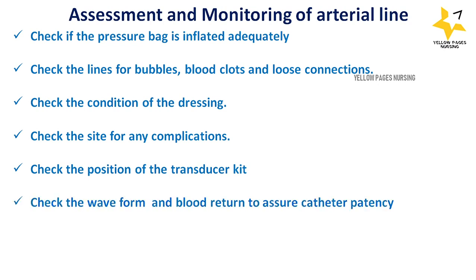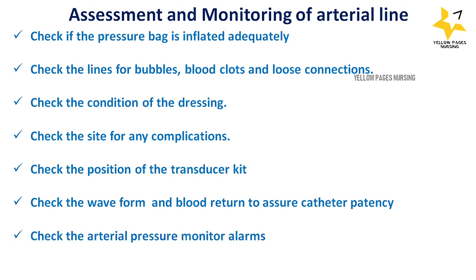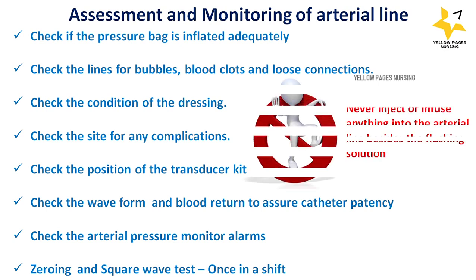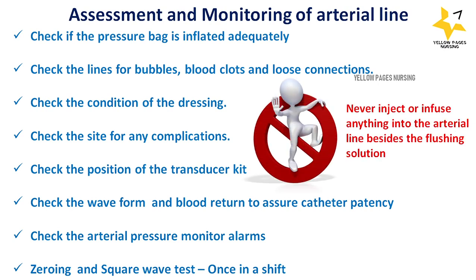Check the arterial pressure monitor alarms — they should always be on. Zeroing and the square wave test should be performed once per shift to ensure accuracy. Never inject or infuse anything into the arterial line besides the flushing solution, and do not flush the line if you see air bubbles in it.